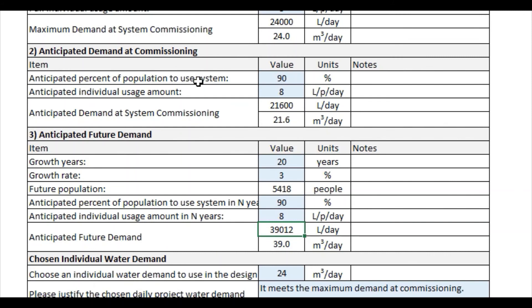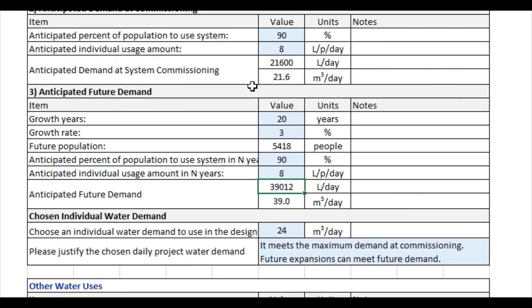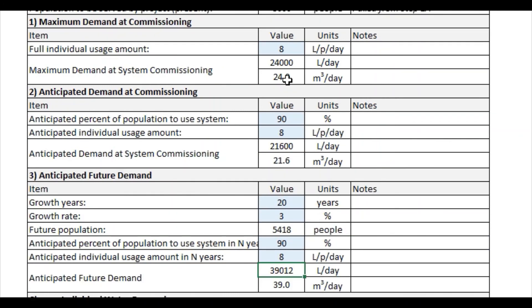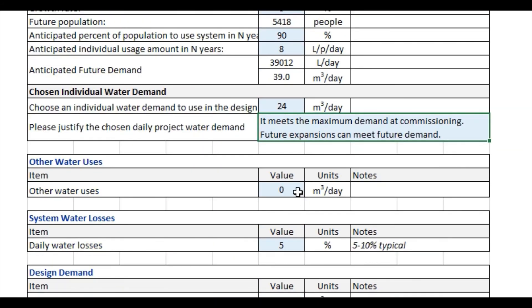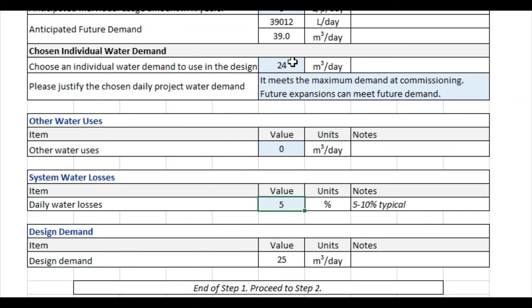Now we've calculated all three different demands, and it's up to you to decide which is the appropriate one to use as the water demand. In this case, we're going to choose our maximum demand at system commissioning, which was 24 cubic meters per day. We enter that here and give an explanation as to why we chose that water demand. If there are other water uses — such as for irrigation, livestock, or other means — you can enter that here. We also consider daily water losses, an estimated percentage that might be lost due to leakage or spillage. Assuming 5% losses added to the 24 cubic meters per day gives us a design demand of 25 cubic meters per day. That's the end of the first step of determining safe water demand.